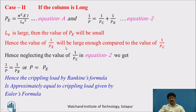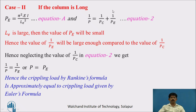Case 2 — when the column is long: P_E = π²EI / L_eff². If L_eff is large, P_E is small, so 1/P_E is large compared to 1/P_C. We can therefore neglect 1/P_C in Rankine's formula, giving 1/P ≈ 1/P_E, or P ≈ P_E. Hence, the crippling load by Rankine's formula is approximately equal to the crippling load by Euler's formula.